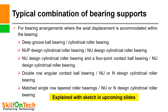Typical combination of bearing supports for arrangements where axial displacement is accommodated within the bearings includes: deep groove ball bearing with cylindrical roller bearings, NUP design cylindrical roller bearings with NU design cylindrical roller bearings. The four-point contact ball bearing's outer ring will be free to accommodate axial load. If provision for axial displacement is not kept, the axial load will impact on the bearing and the bearing may fail.